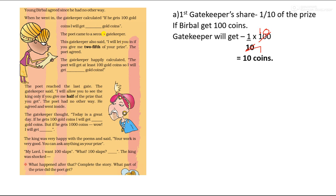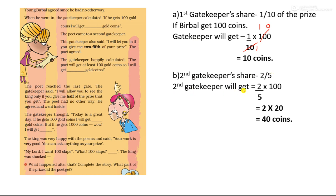The poet came to a second gatekeeper. This gatekeeper also said: 'I will let you in if you give me 2 fifths of your prize.' The poet agreed. The gatekeeper happily calculated: if Birbal gets 100 gold coins, I will get 2 fifths of 100. 2 fifths of 100 is 40 coins. So the second gatekeeper will get 40 coins.